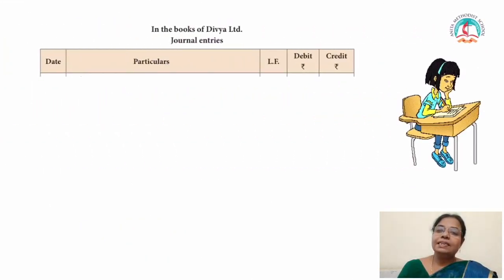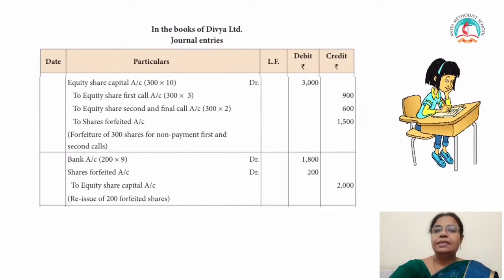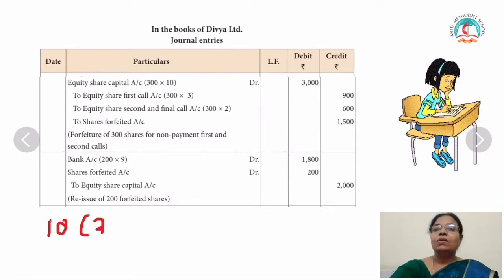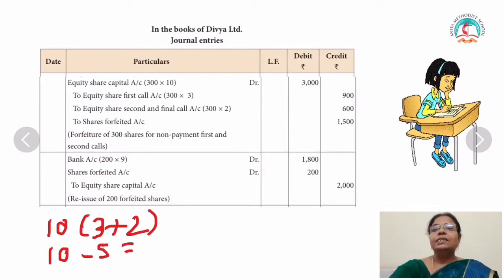Now the next journal entry is for forfeiture of shares. Because he failed to pay on 300 shares on first call and final call. Equity share capital account: 300 at the rate of 10 — to equity share first call: 300 at the rate of 3 = 900, and to equity share second and final call: 300 at the rate of 2 = 600. The shareholder failed to pay both the first call and the final call, so the balance is rupees 5. Shares forfeited: 300 into 5 = 1,500. Forfeiture of 300 shares for non-payment of first and second call.